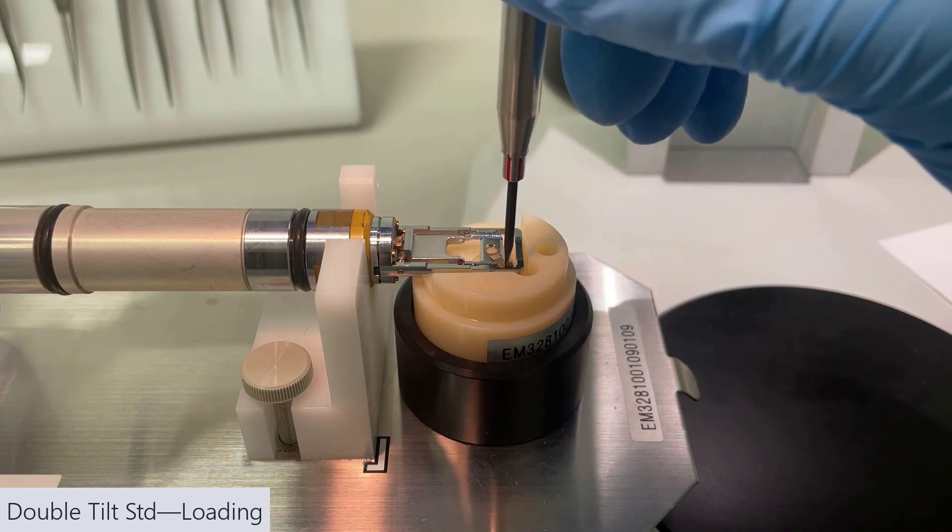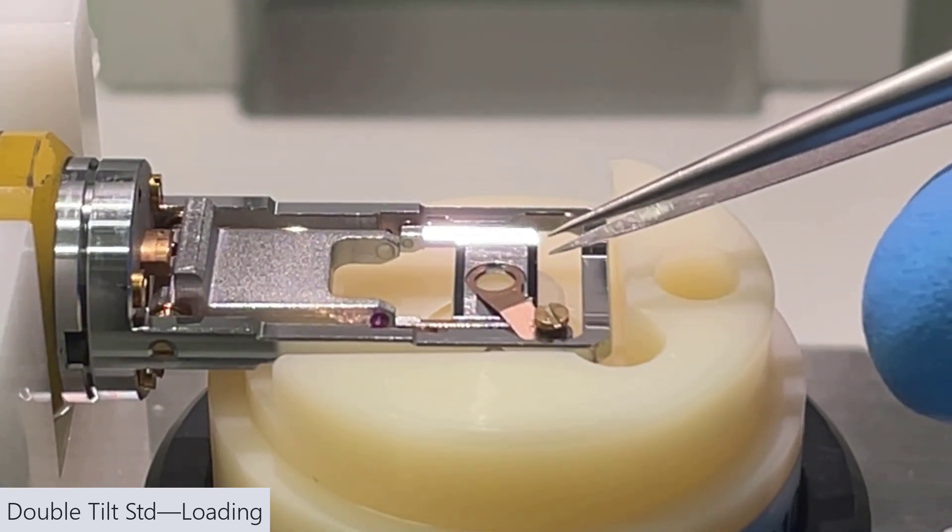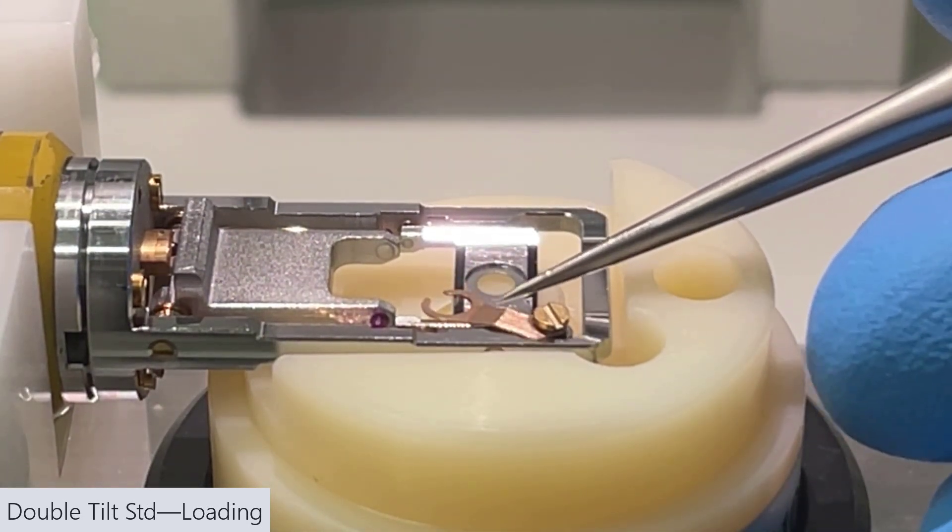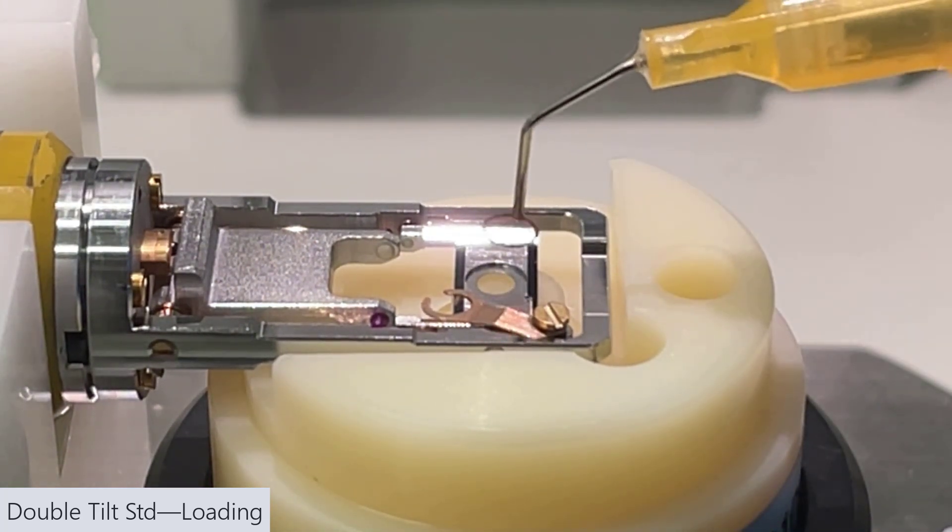In this case, we only have one screw. We're going to loosen that a few turns. Use some sharp tweezers to just move it out of the way. Then we'll bring in our sample and drop it in place.